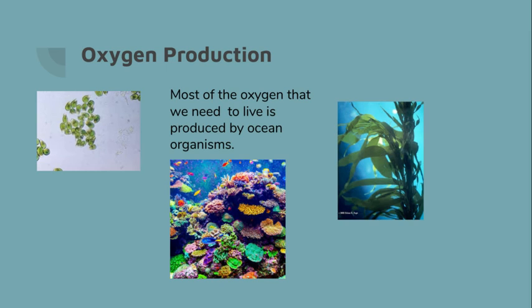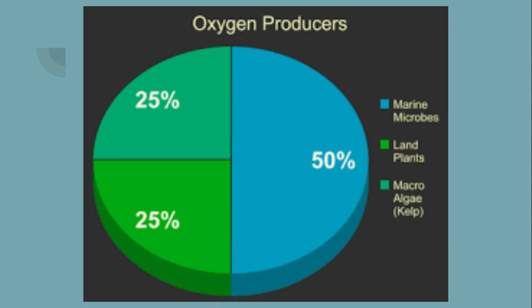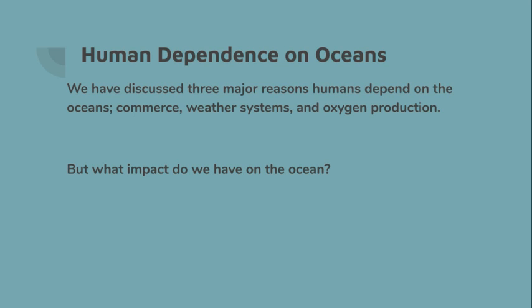The third huge impact that the ocean has on human life is oxygen production. Most of the oxygen that we need to live is produced by ocean organisms. This graphic will help you answer questions later.